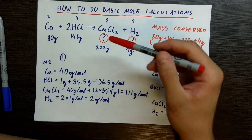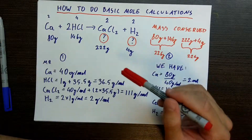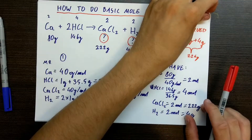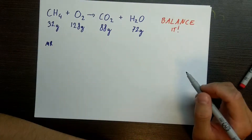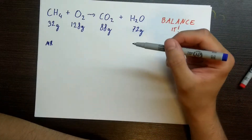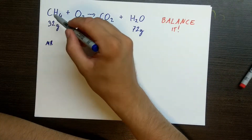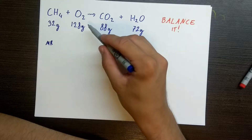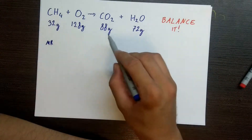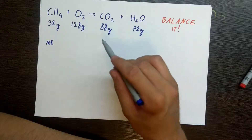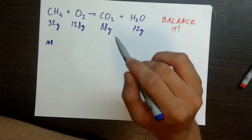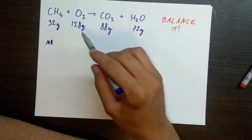So this is how we figure out how much product we get based on how much reactant we have and the equation. Now let's try to do something similar but the opposite way. We have the combustion of methane: CH₄ plus O₂ gives us CO₂ plus H₂O. We are given the masses of the reactants as well as the products, but they are unbalanced and we need to balance the equation using just those masses.